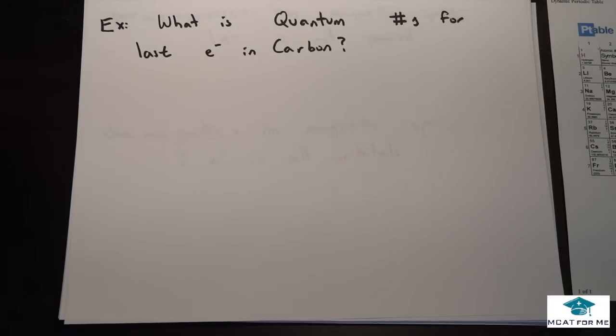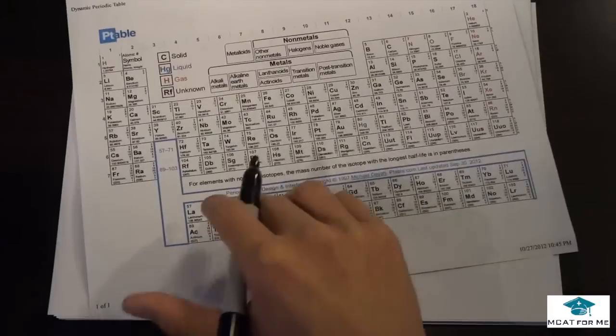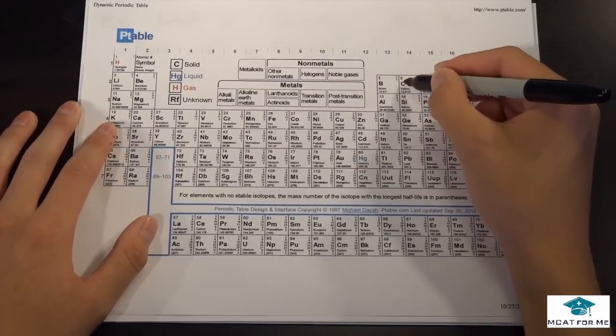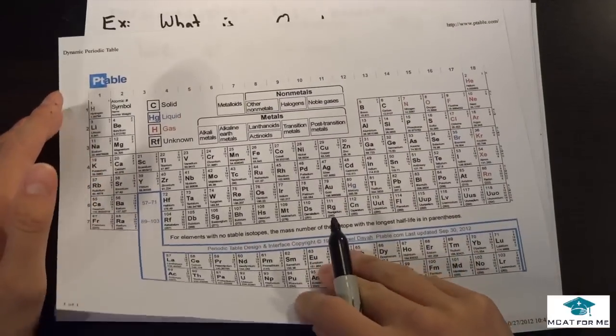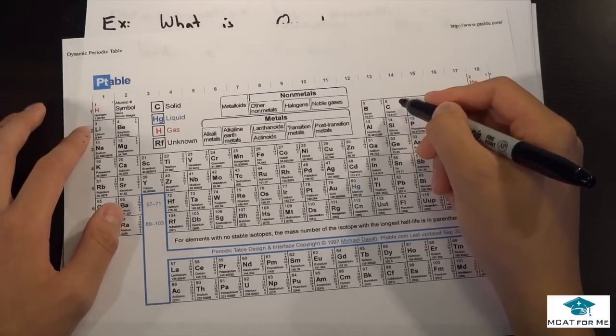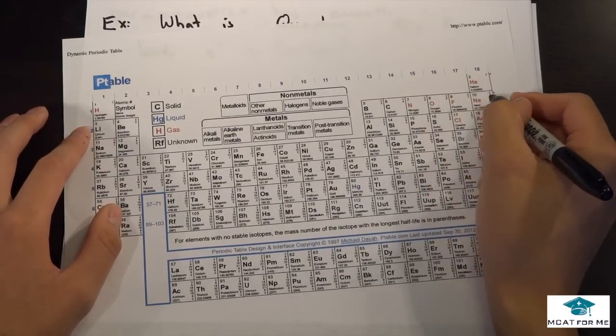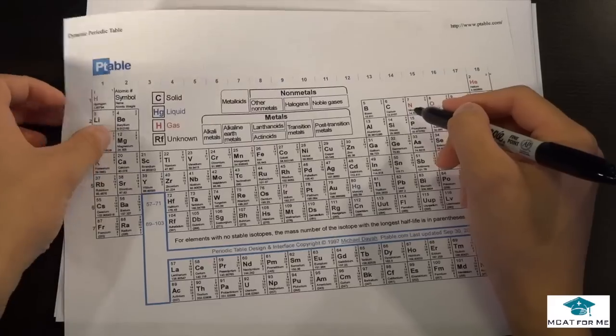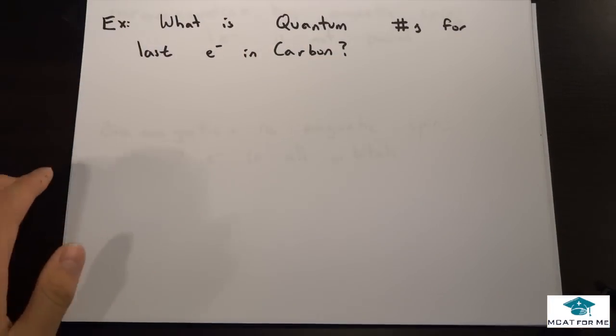So this one's asking us what is the quantum number, or the quantum numbers actually, for the last electron in carbon. What they mean by that is they want to find the very last electron in carbon, which would be this electron right here. So it would be in the second period, it would be in the P block, and then it would be the second electron in the orbitals, and we'll see how we can do that.